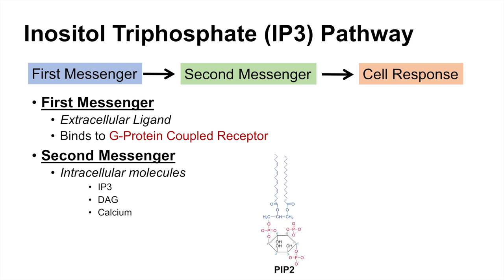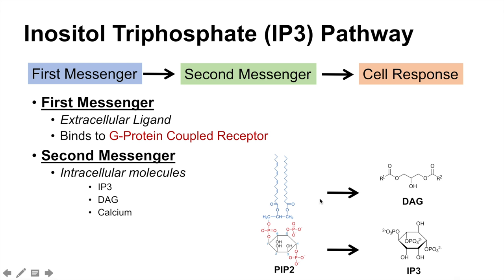I'm going to show you this molecule here, PIP2, or phosphatidyl inositol 4,5-bisphosphate. PIP2 actually acts as a precursor molecule for the formation of DAG and IP3. PIP2 can get cleaved essentially in half — the top half forms DAG, and the bottom part is IP3. So PIP2 acts as a precursor molecule for the second messengers diacylglycerol and inositol triphosphate.